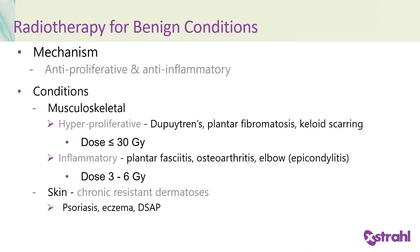We can also use radiotherapy for benign conditions, and there are two main mechanisms: anti-proliferative and anti-inflammatory. We can treat musculoskeletal conditions — in two categories: hyperproliferative, including Dupuytren's disease, plantar fibromatosis, and keloid scarring, where the dose can be up to around 30 Gy; and inflammatory conditions such as plantar fasciitis, osteoarthritis, and epicondylitis, where the dose tends to be much lower at three to six Gy. We can also treat benign skin conditions such as chronic resistant dermatoses including psoriasis, eczema, and disseminated superficial actinic porokeratosis.